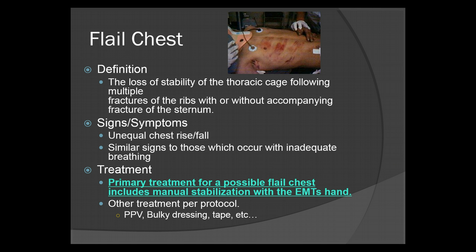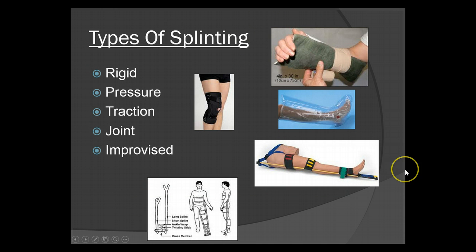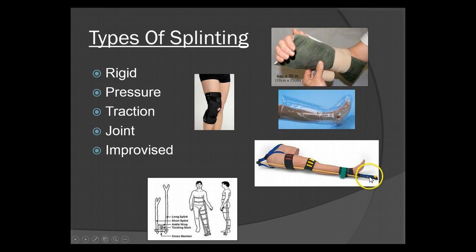Be aware of your local protocols. Now we're going to look at splinting — the different types. You have the rigid splint, which is this green one in the top right corner. Your pressure splint, which is this one here on the ankle. Your traction splint is this contraption here, because it pulls traction on the leg to hopefully put the femur in position. Then you have your joint splint, much like knee braces that you see. And then of course your improvised splints, where you just take what you've got and do what you can.